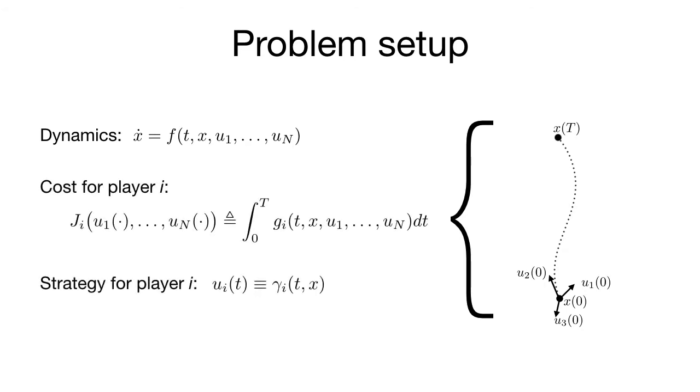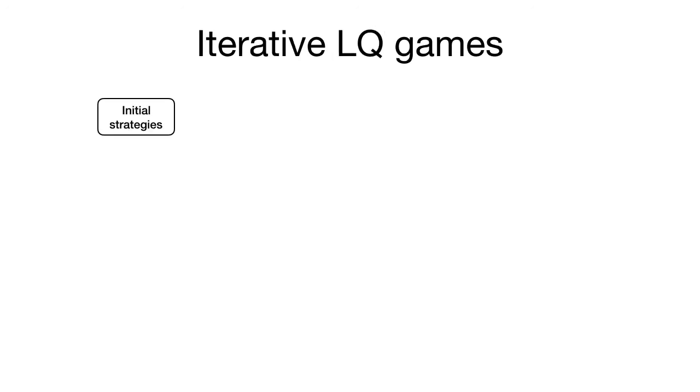We will solve for time-varying feedback strategies. That is, each player's input can depend upon both the current time and the entire game state x. Global equilibria of differential games can be extremely hard to find.